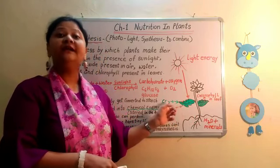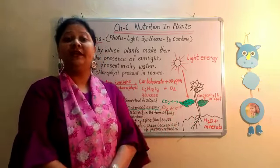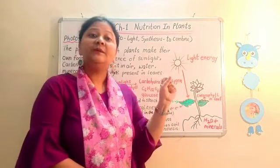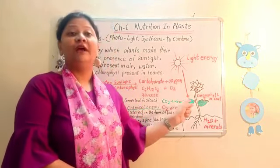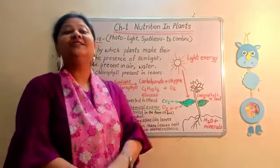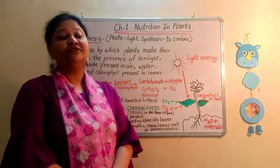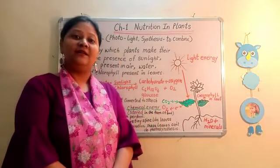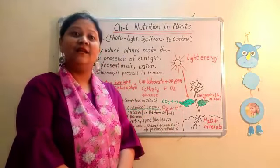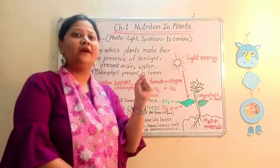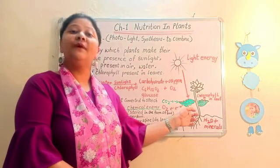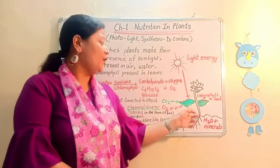Now coming to carbon dioxide: carbon dioxide which is present in the air will enter the plants through the leaf — specifically through the tiny pores present on the surface of the leaf known as stomata, which are also surrounded by guard cells. So carbon dioxide from the air enters the plants through the stomatal pores of the leaves.